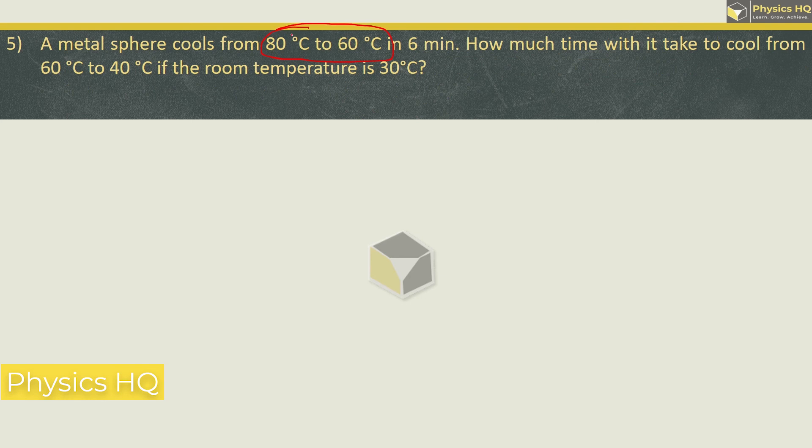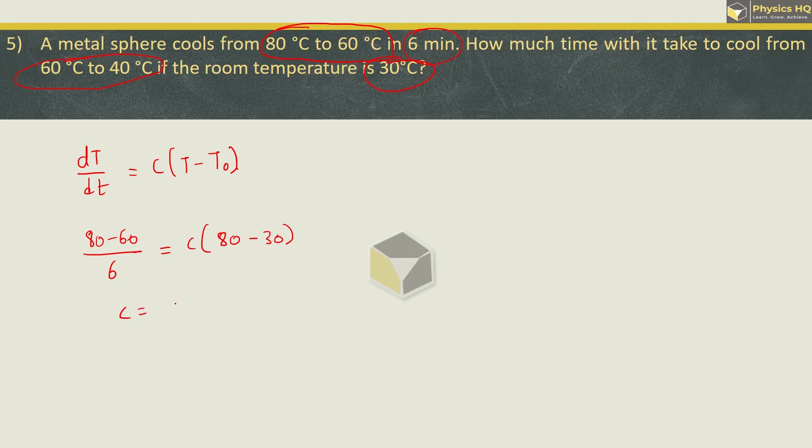A metal sphere cools from 80 degree Celsius to 60 degree Celsius in 6 minutes. How much time will it take to cool from 60 to 40 degree Celsius if the room temperature is 30 degree Celsius? Rate of change in temperature is given by c into T minus T0. For the first case, change in temperature from 80 to 60 and the time taken is 6 minutes. This equals c times temperature was 80 initially and room temperature is 30.